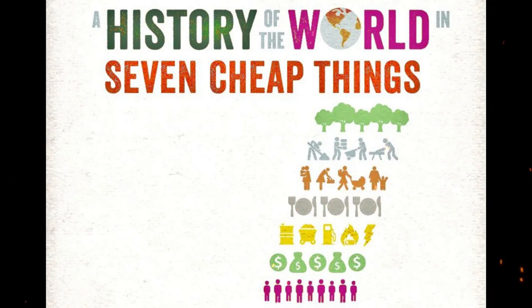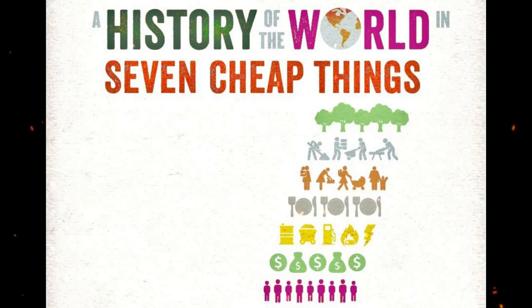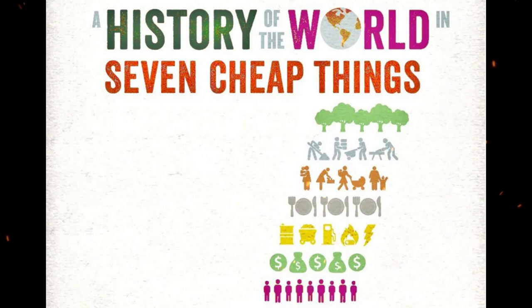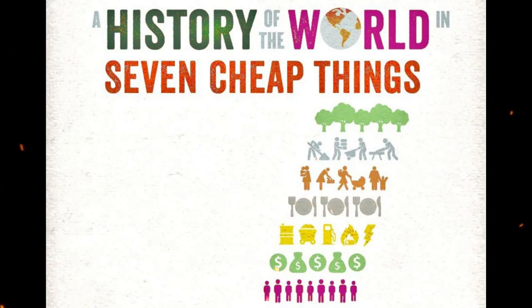The physical pressures of poultry work frequently result in injuries, meaning that workers depend on the care of family members either to stay in work or to recover from work. This care contributes to the production of the McNugget, but it is entirely unpaid, so it's very cheap care.